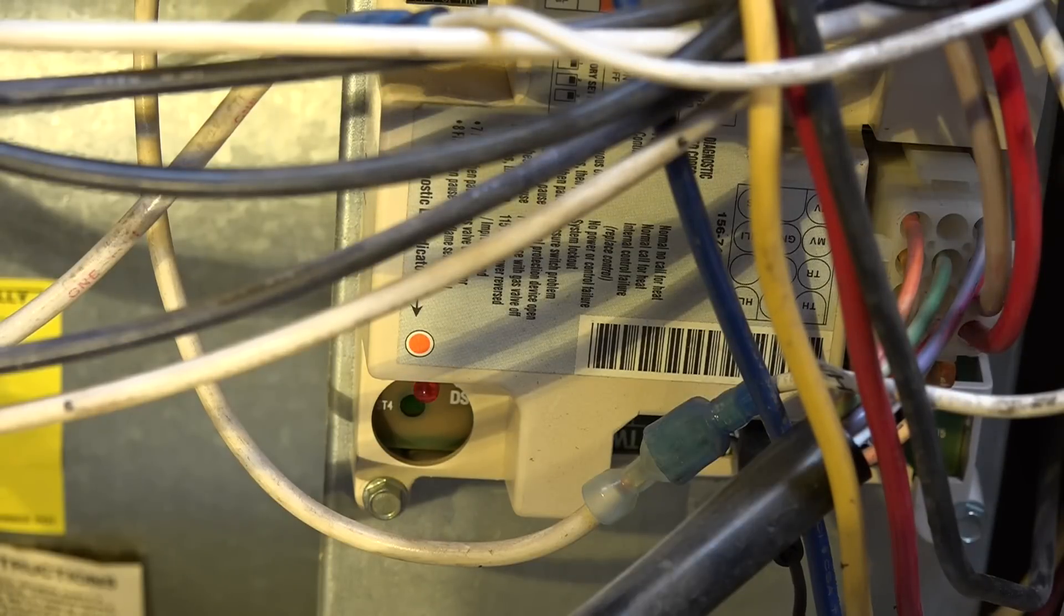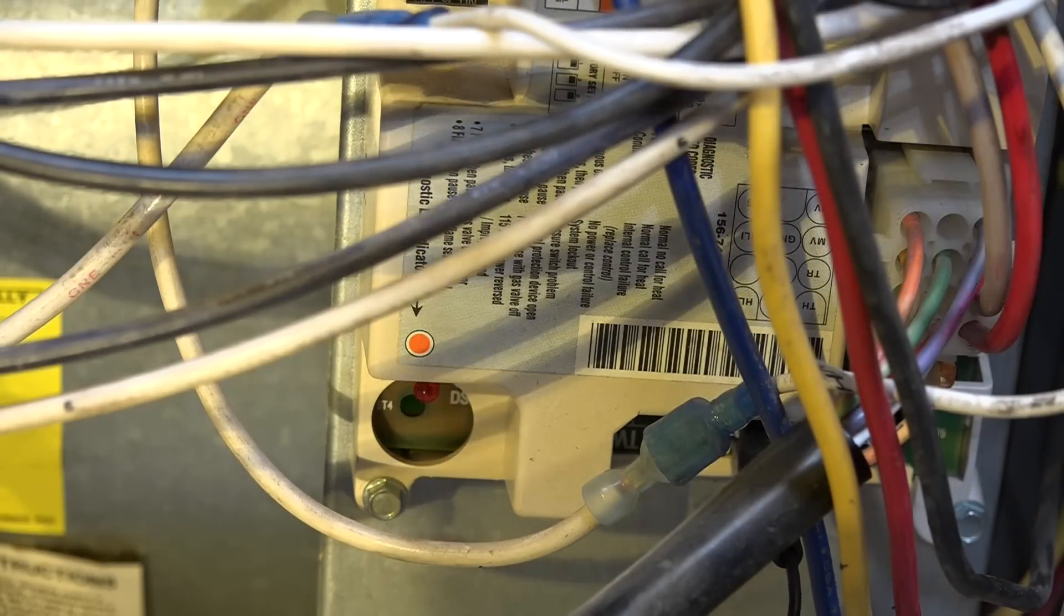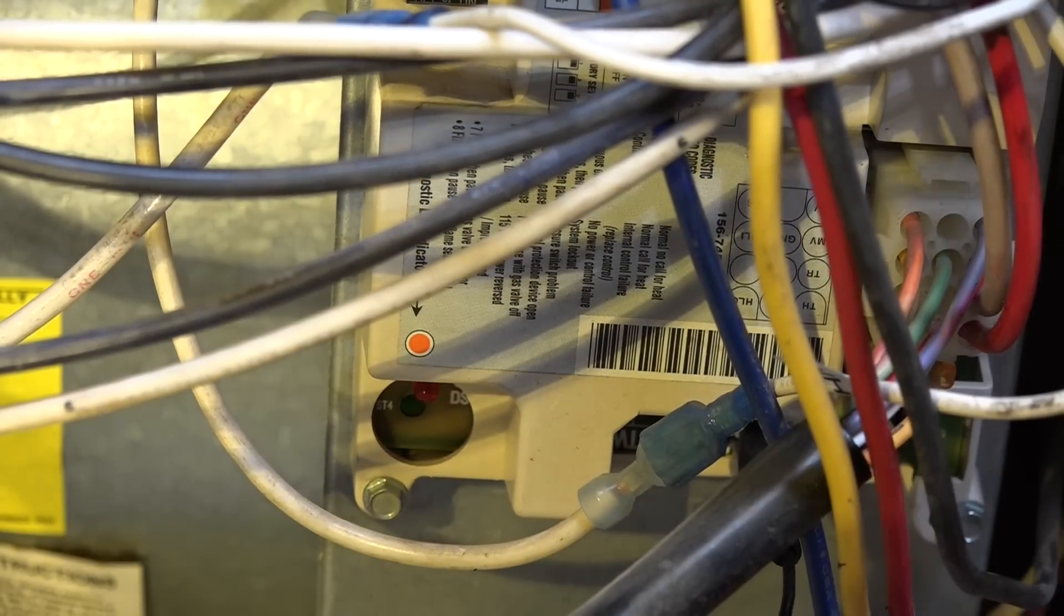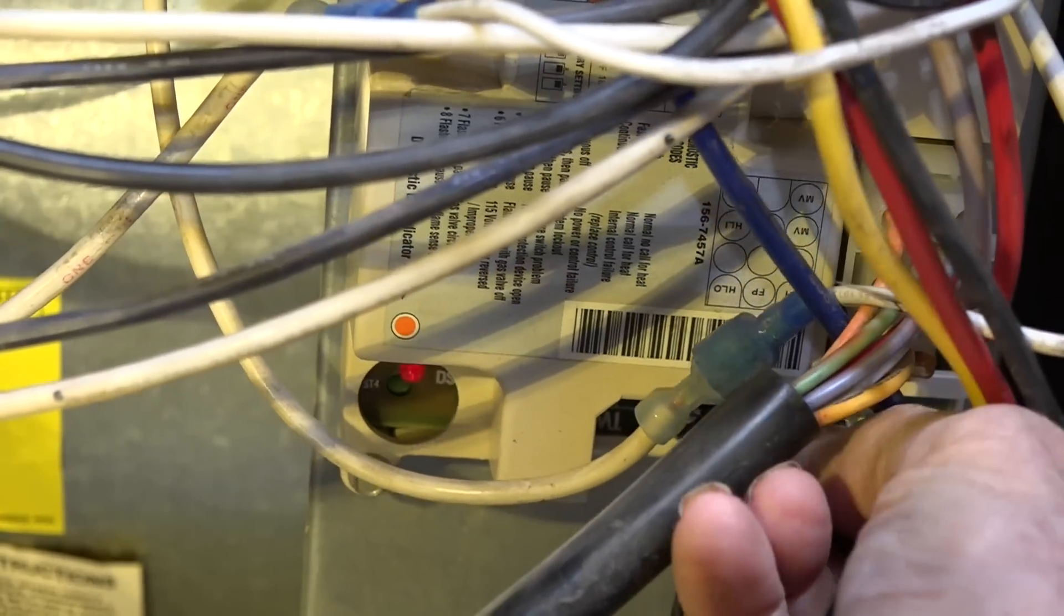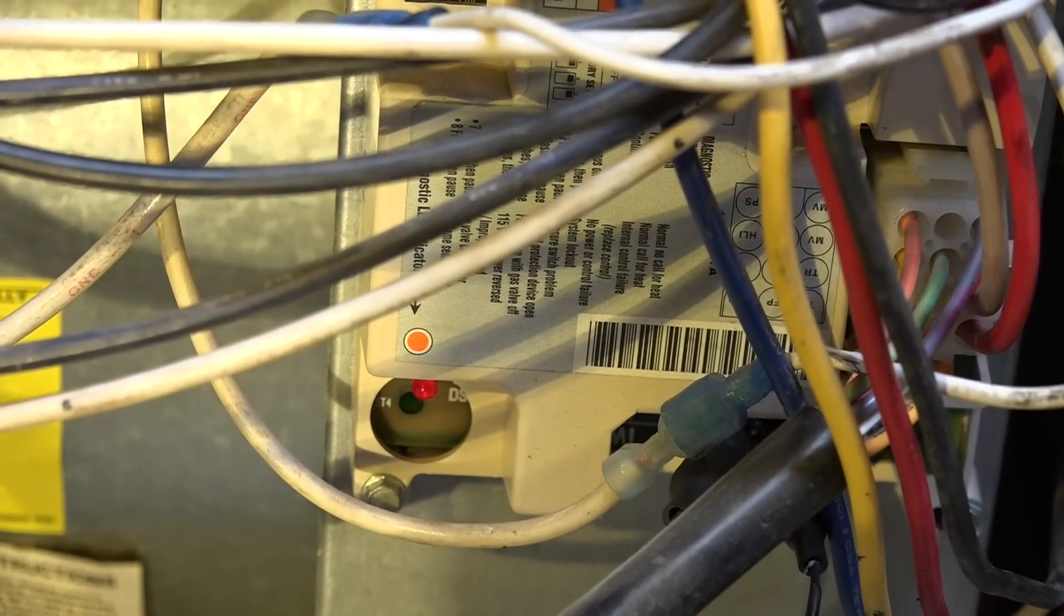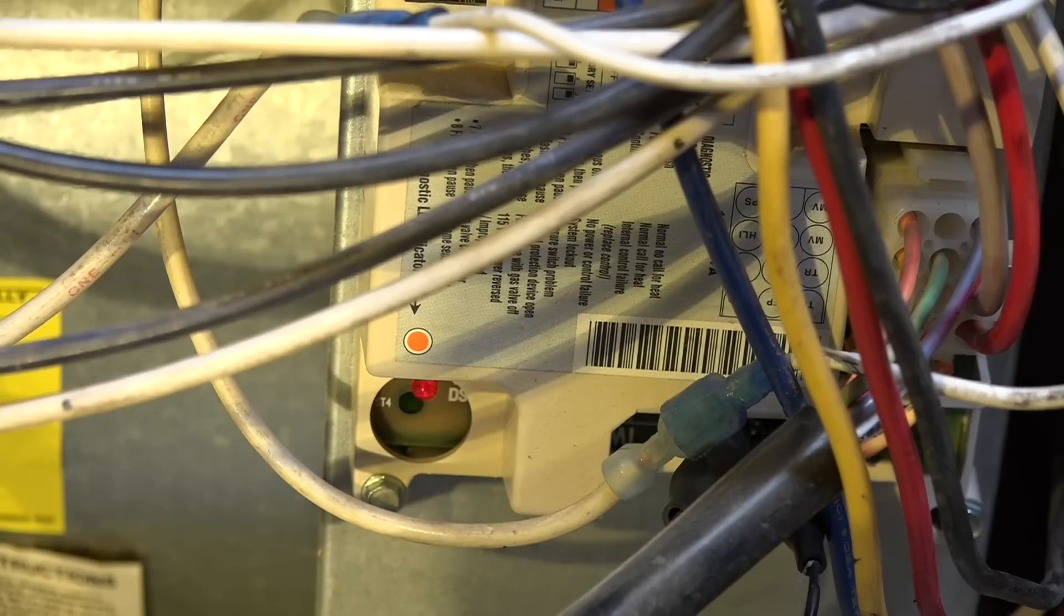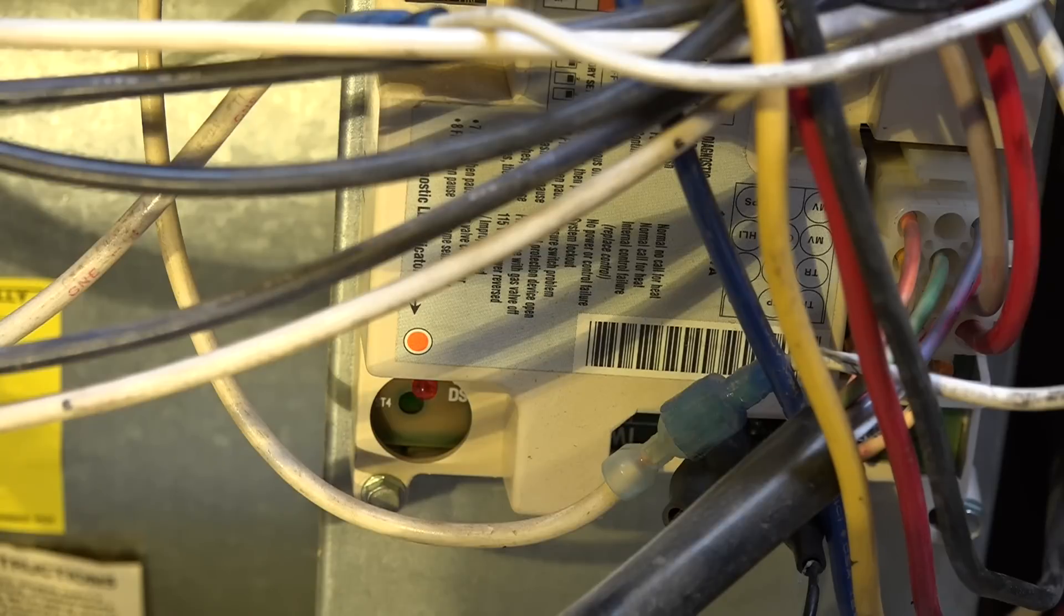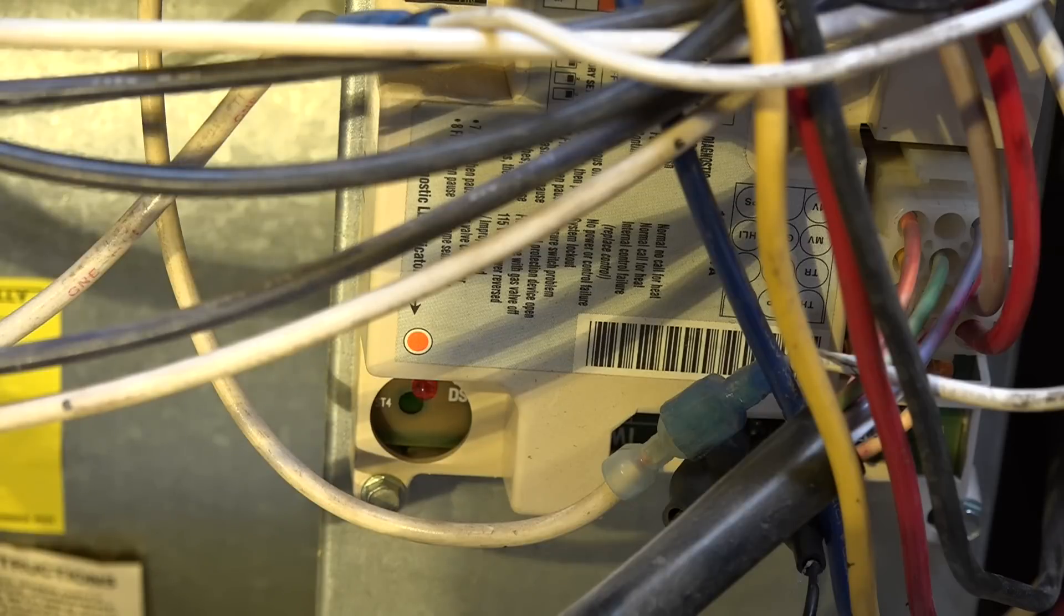Now here we're starting out with the normal slow blink and we're going to call for heat. We've got fast blink. Now you notice it only took about five or six seconds. If it didn't make that pressure switch in five or six seconds then it's going to go out on a pressure switch problem.